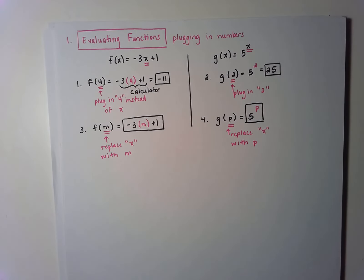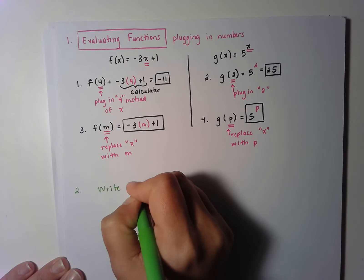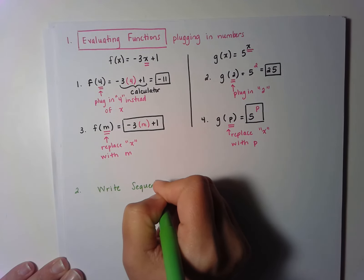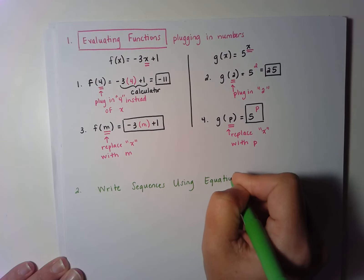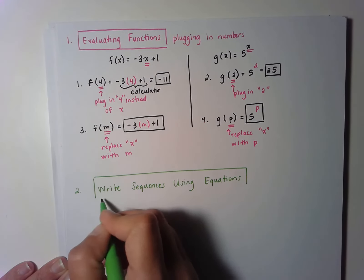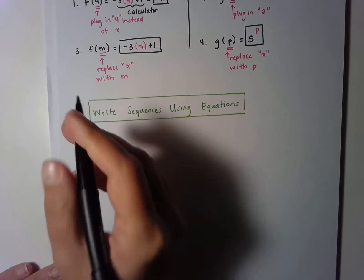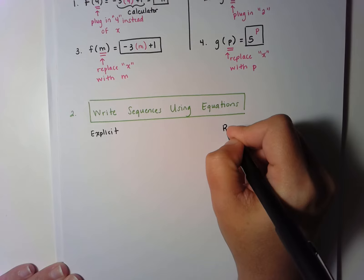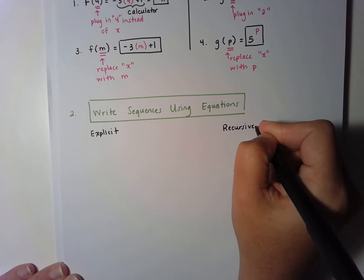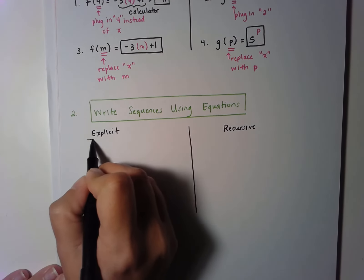The second big topic on our test is going to be writing sequences using an equation. So if I give you an equation, can you write the sequence that comes from it? There are two types of equations I could give you: I could give you an explicit equation or I could give you a recursive equation. Depending on what type of equation you have, there are different methods for writing out the sequence, so we're going to go over both of those right now.